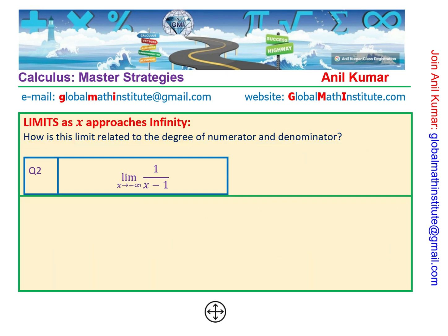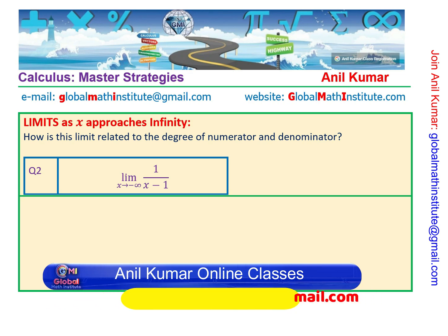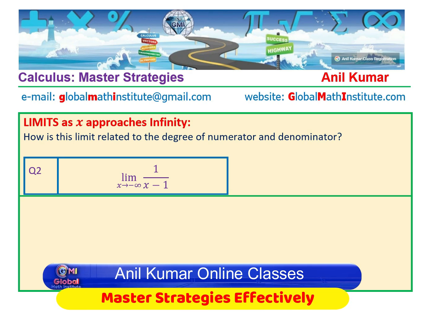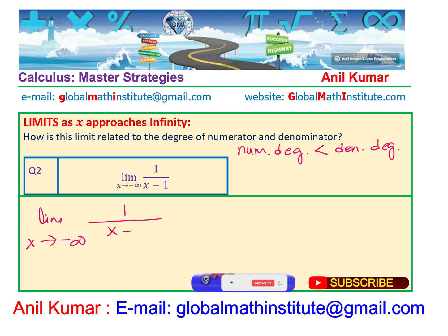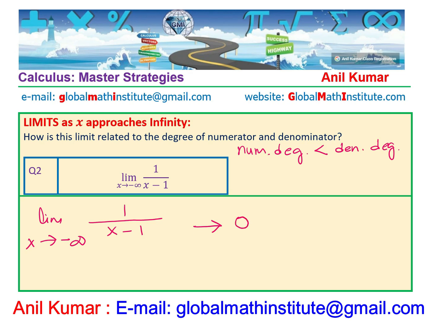Now let's take the second question, where we need to find the limit as x approaches negative infinity of 1 over (x − 1). Here the numerator degree is less than the denominator degree, so we should get a finite value. If we have a very large number such as negative 1,000 or negative 10,000, and we divide by a very large number, this is actually approaching 0 — but from the negative side.